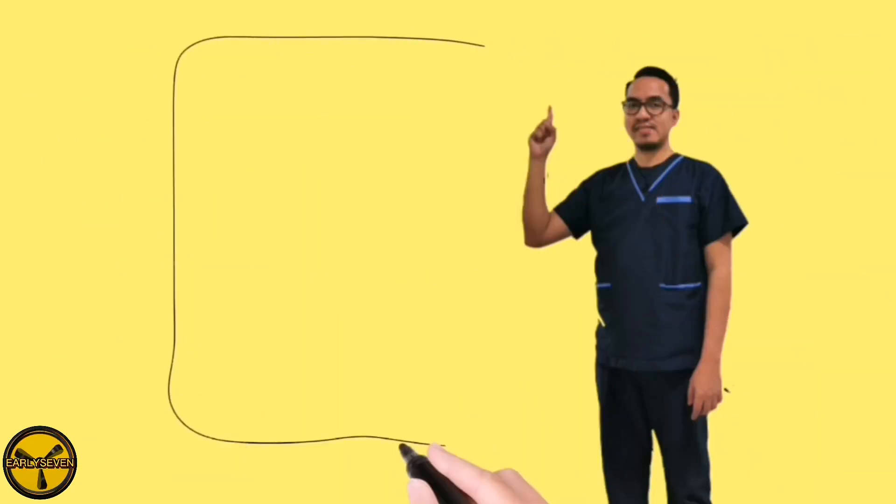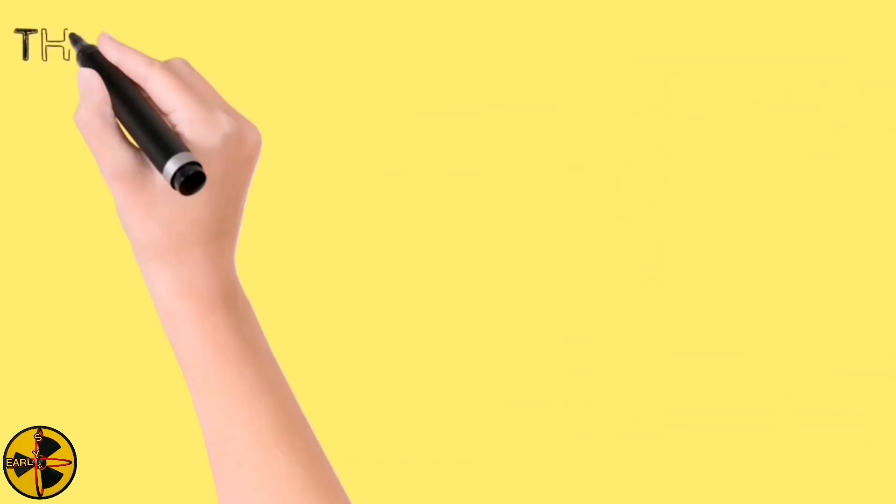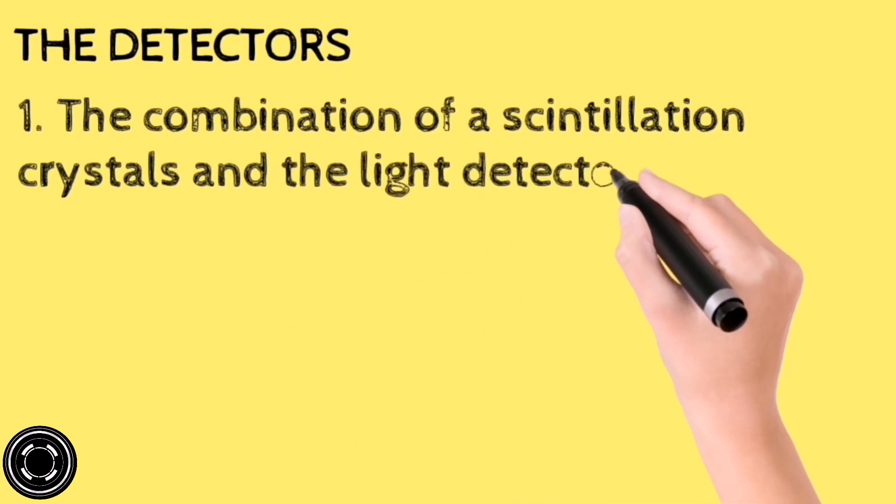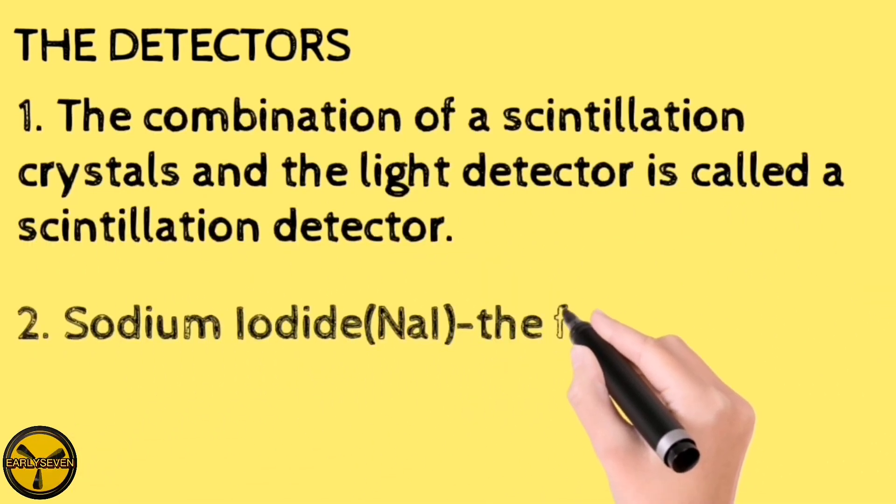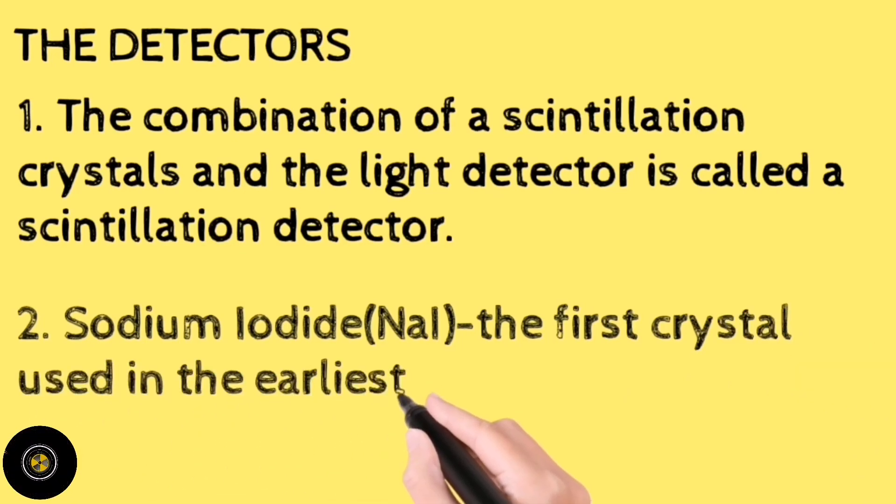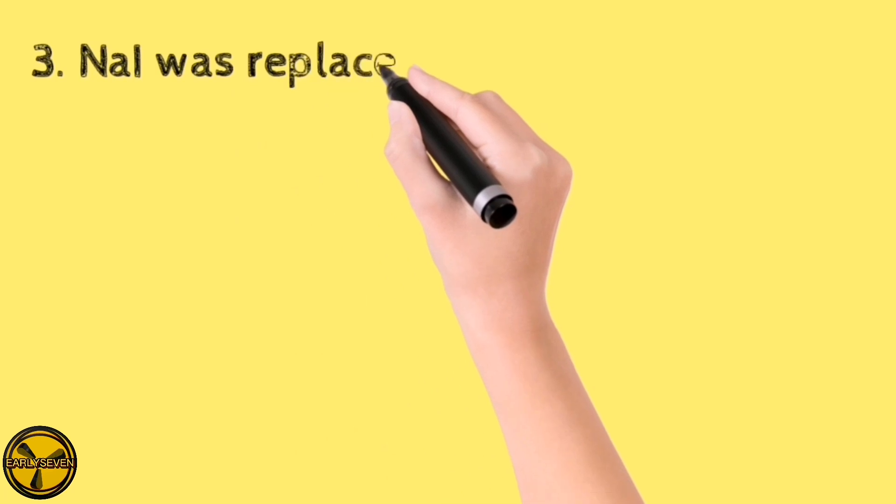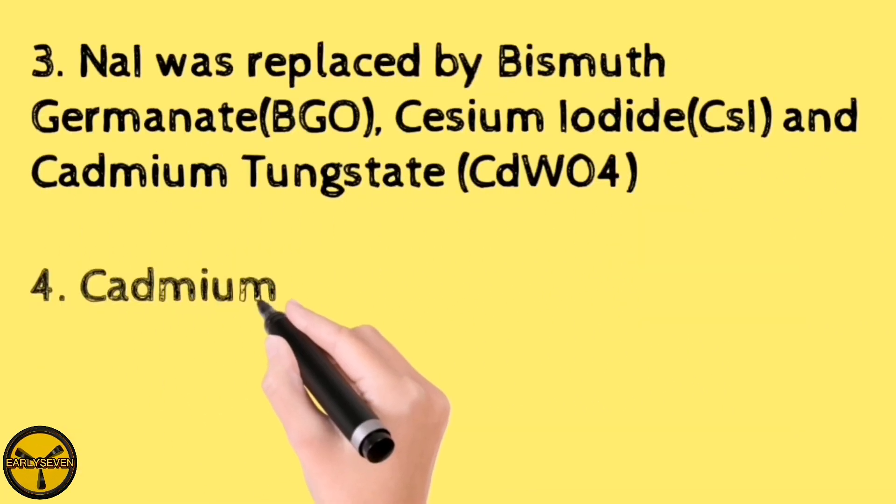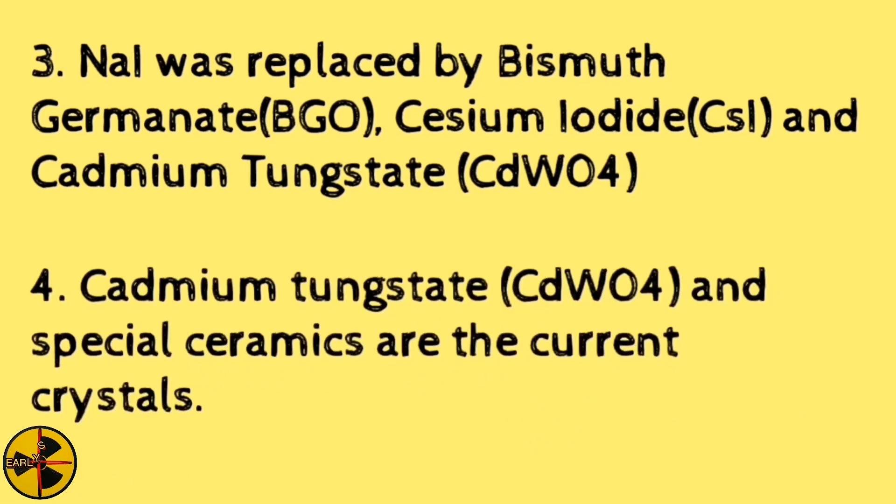The third main component of a CT scanner is the detector. The combination of a scintillation crystals and the light detector is called a scintillation detector. Sodium iodide is the first crystal used in the earliest scanner. Sodium iodide was replaced by bismuth germinate, cesium iodide, and cadmium tungstate. Cadmium tungstate and special ceramics are the current crystals.